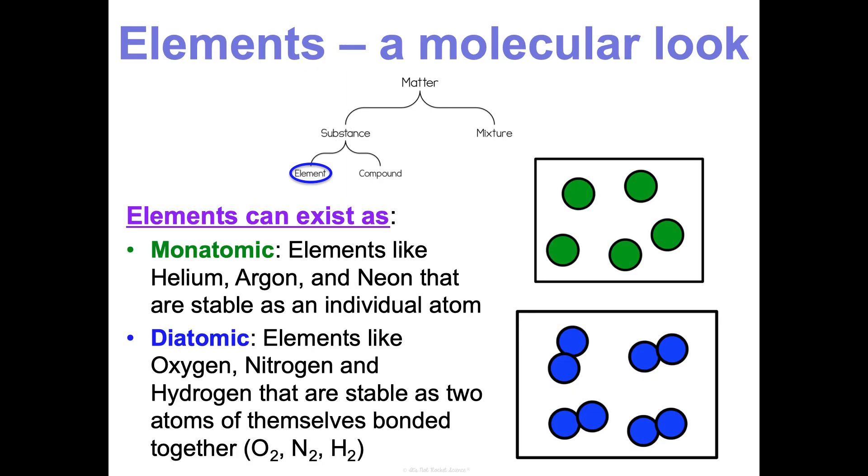Elements exist kind of two different ways. They can be considered monatomic or diatomic. So monatomic elements would look like this if we zoom in on a molecular level. Things like helium, argon, neon, they are most stable as an individual atom. They are most stable on their own.